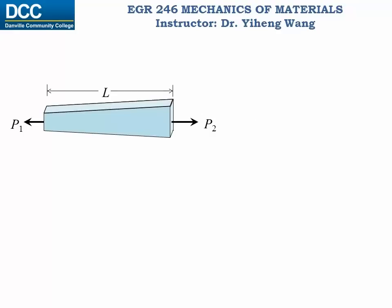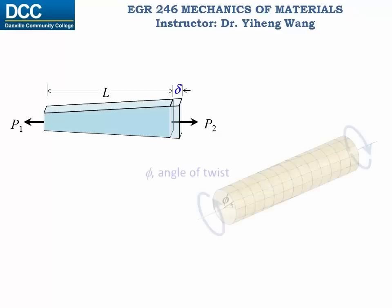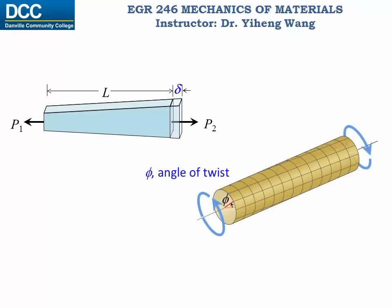We have already discussed the deformation caused by the internal normal force, characterized by delta, the displacement. We also learned the deformation caused by the internal torsional moment, characterized by phi, the angle of twist. But what about the deformation caused by the internal shear force and internal bending moment?